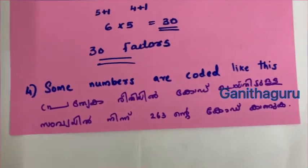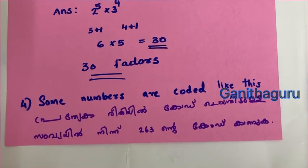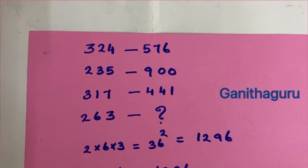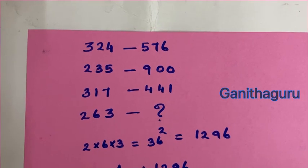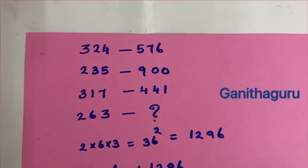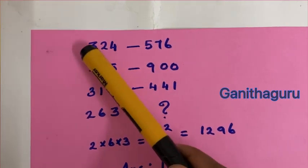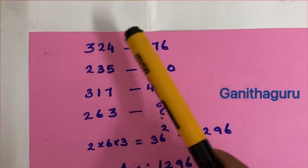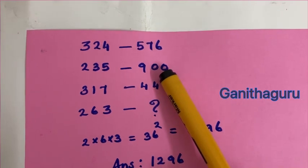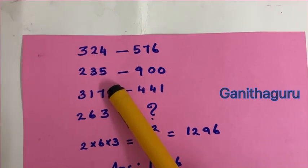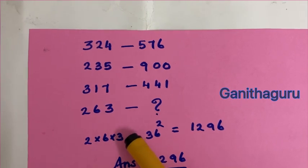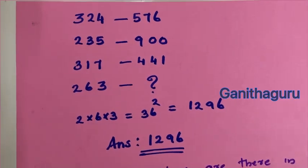Some numbers are coded. The code is 233. We calculate: 2×6 is 12, 12 squared is 576. Then 2×3 is 6, 6×5 is 30, 30 squared is 900. Then 3×7 is 21, 21 squared is 441. Then 2×6×3×2 is 12, 12×3 is 36, 36 squared is 1296. The answer is 1296.